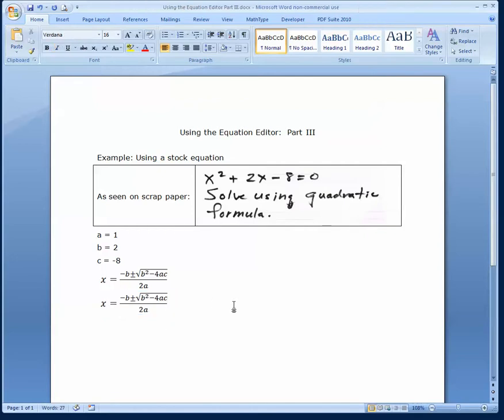And now, we'll put in the coefficient values we have. So if B is equal to 2, and A is equal to 1, got to put parentheses around that, and C is equal to minus 8.